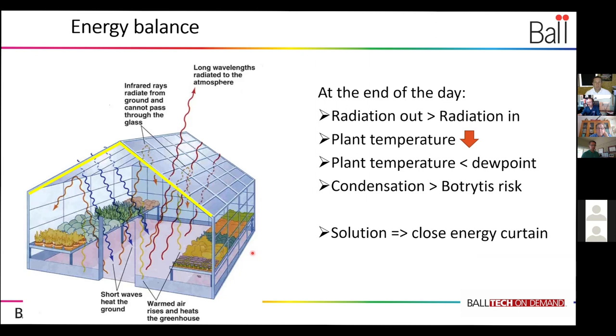So then it's better to close the energy curtain. There are sensors available which you can connect with your climate controller. They're called pygeometers. They measure the outgoing radiation, and when you see that the outgoing radiation is equal to the incoming radiation, that's a good moment to close your energy curtain to reduce the outgoing radiation.